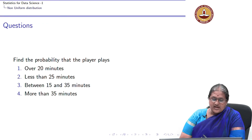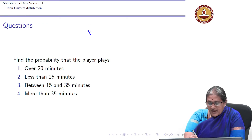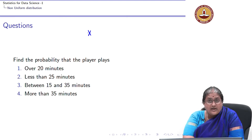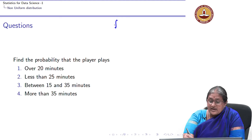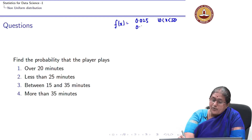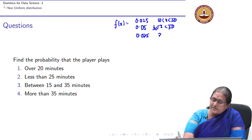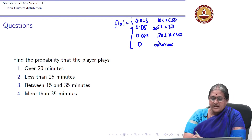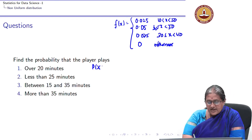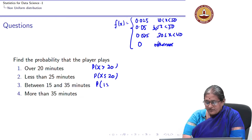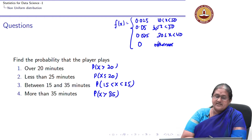Given x, I do not have a named distribution, but I know the PDF: f(x) = 0.025 for 10 < x < 20, f(x) = 0.05 for 20 ≤ x < 30, f(x) = 0.025 for 30 ≤ x < 40, and 0 otherwise. We are asked to find: P(X > 20), P(X ≤ 25), P(15 < X < 35), and P(X > 35).